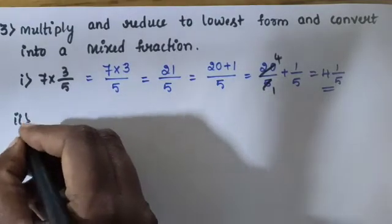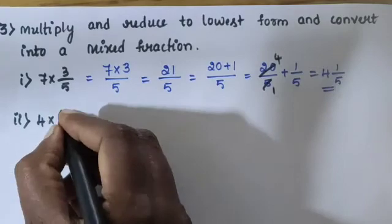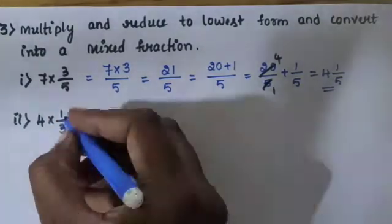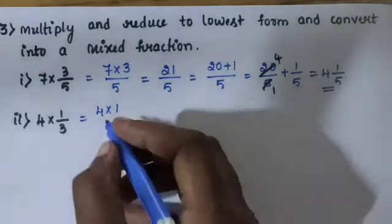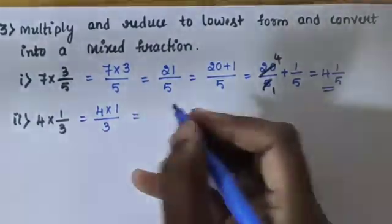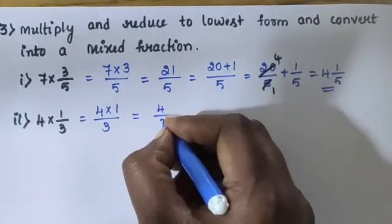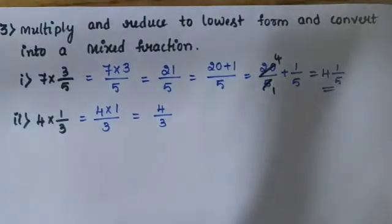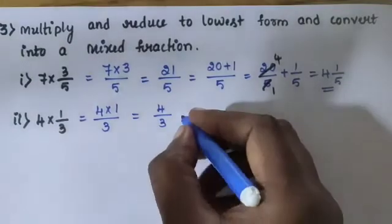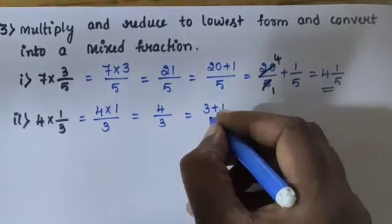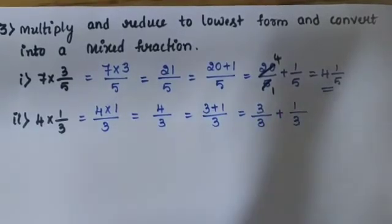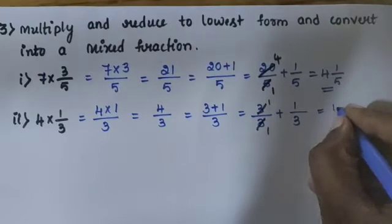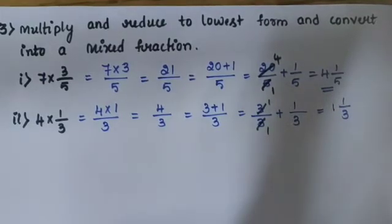Sub-question 2: 4 into 1 by 3. Same process — whole number into numerator divided by denominator. 4 into 1 is 4, divided by 3. 4 by 3 is an improper fraction. Convert into mixed fraction: 3 plus 1 divided by 3 equals 3 divided by 3 plus 1 divided by 3. Answer is 1 and 1 by 3.